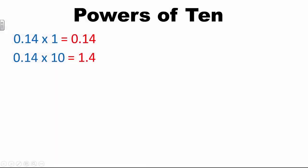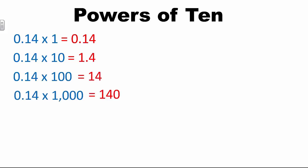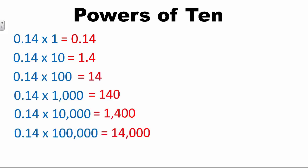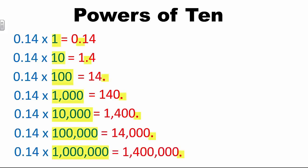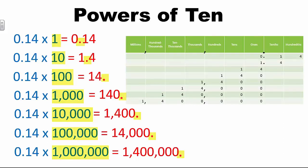If we continue to multiply 14 hundredths by a multiple of 10, we can see that the product in each subsequent problem is 10 times greater. By analyzing multiple examples, students are able to see a pattern between the placement of the decimal and the number of zeros in the product. By looking at the pattern, we can see that the digits shift one place value position to the left each time as the product increases. Students might justify their reasoning by explaining: every time I multiplied by 10, each digit's value became 10 times greater. To make a digit 10 times greater, I have to shift it one place value to the left.